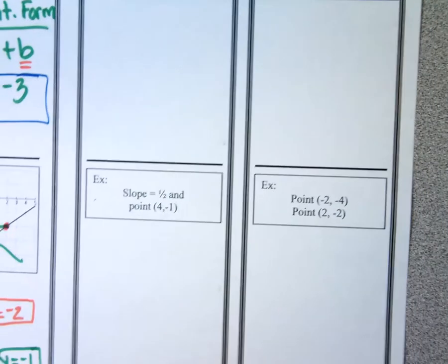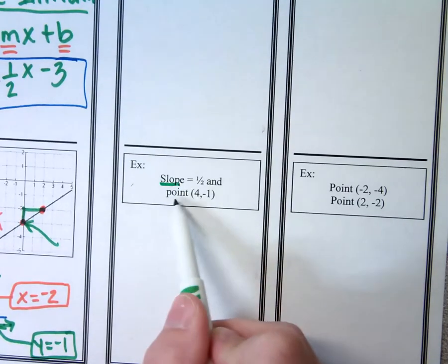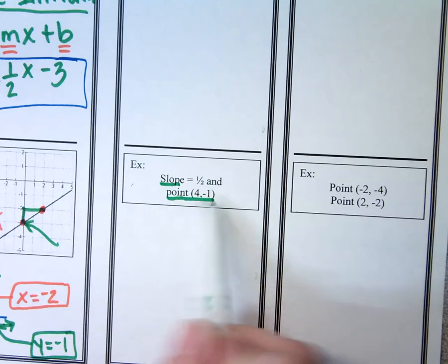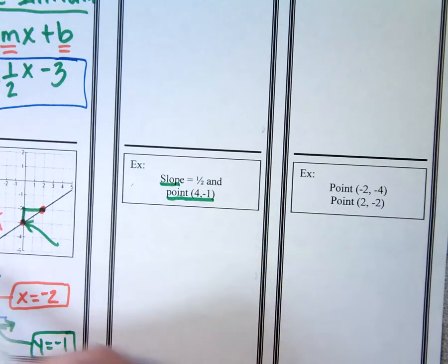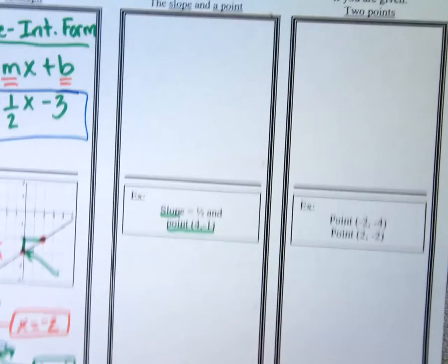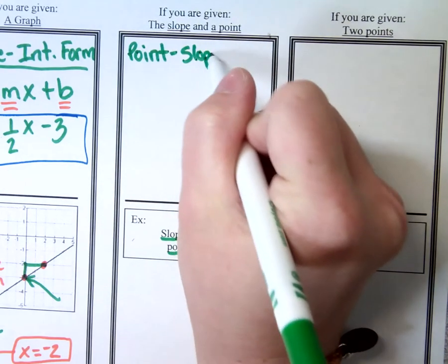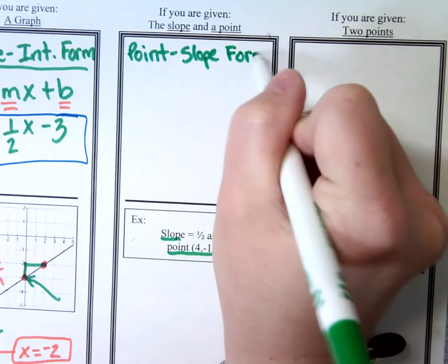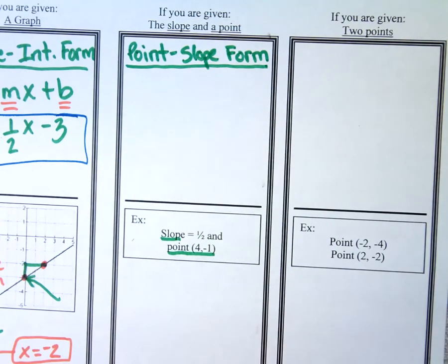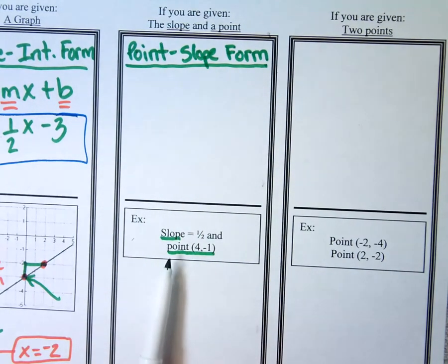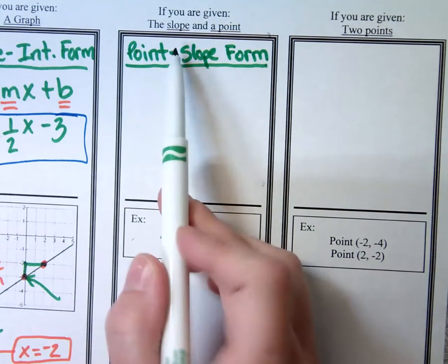Now we're getting into newer material. On this problem, I'm given the slope and a point. If you're ever given a point — not from a picture of a graph, but given a point — we are going to start off with point-slope form. In order to use this form, do I have a point and a slope? Yes, I do, so I'm ready to go.